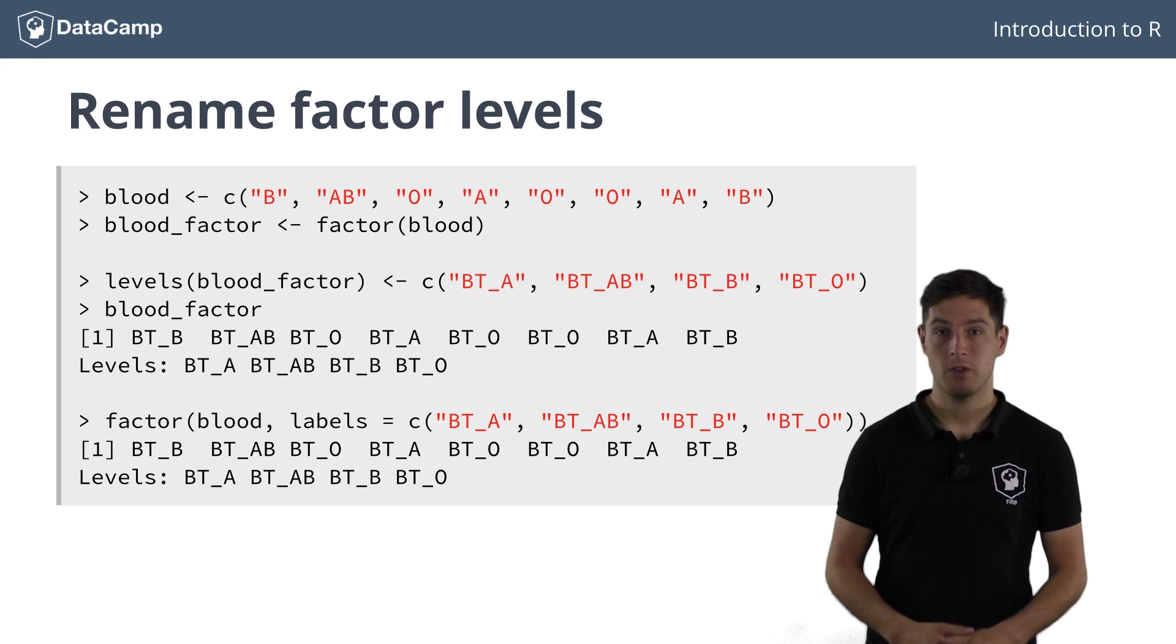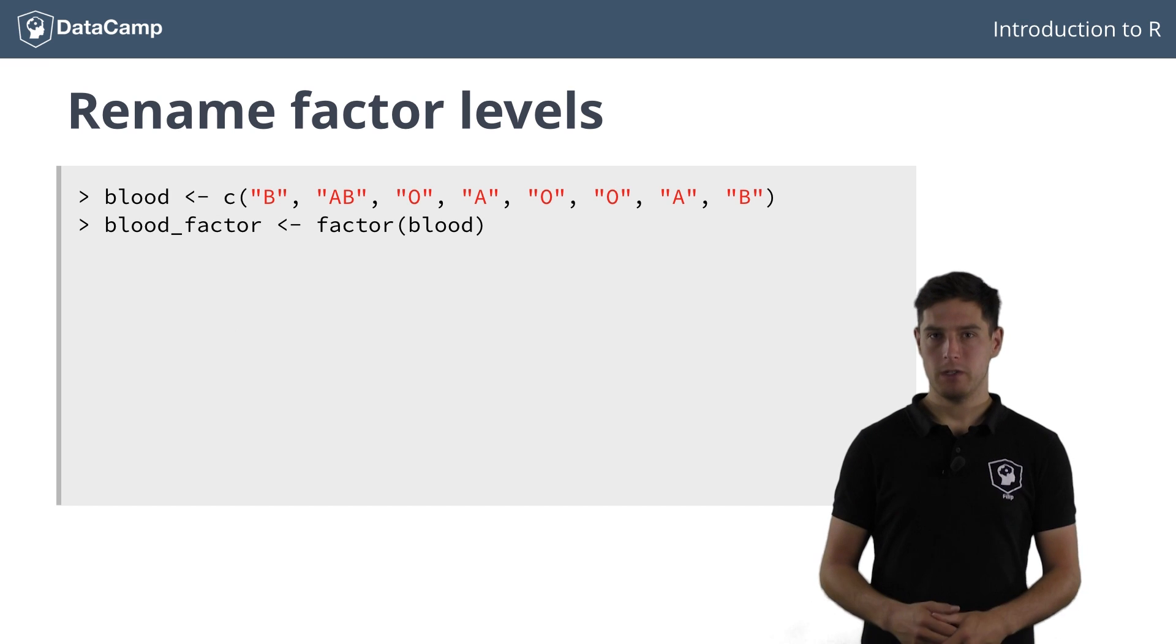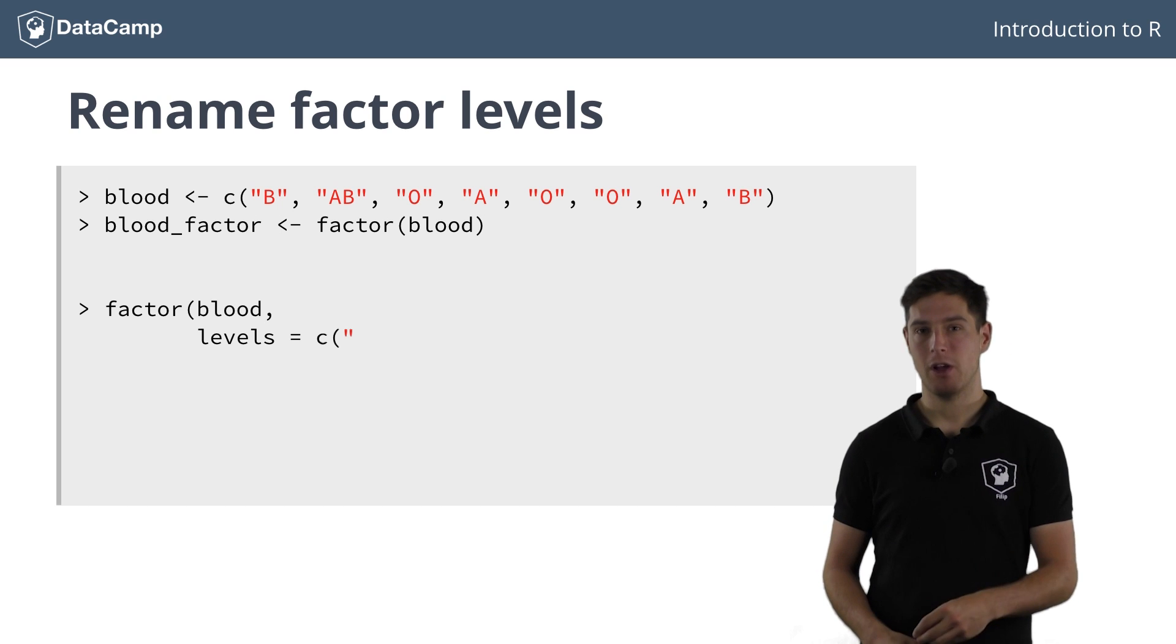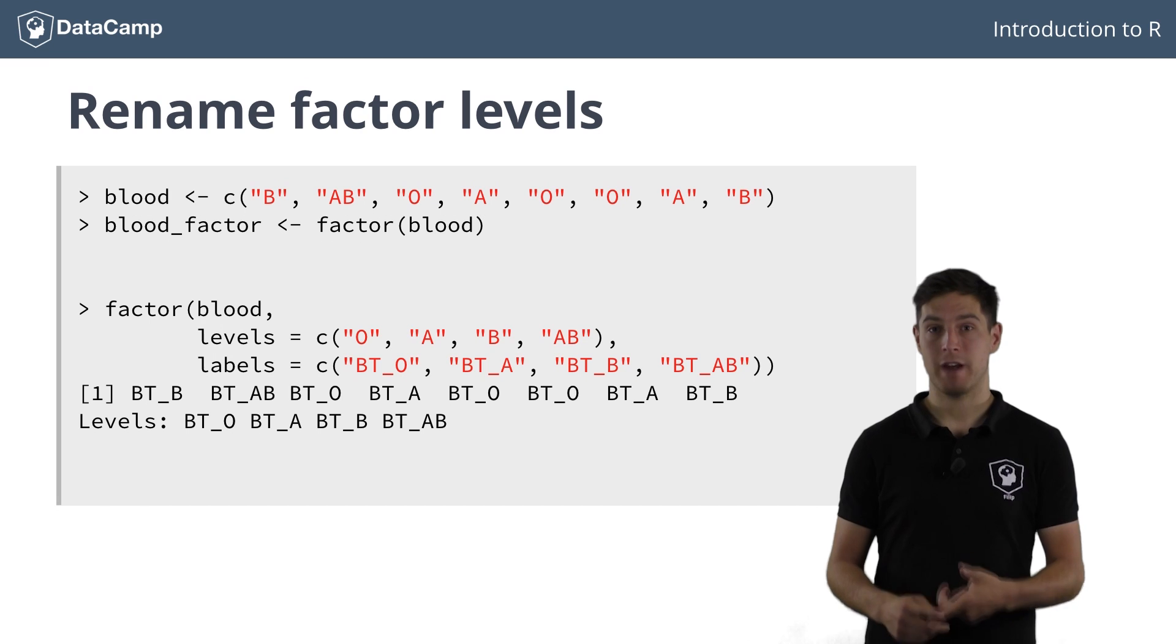But this can be pretty dangerous, you might have mistakenly changed the order. To solve for this, you can use the combination of manually specifying the levels and the label argument when creating a factor. With levels, you specify the order, just like before, while with the labels you specify a new name for the categories.